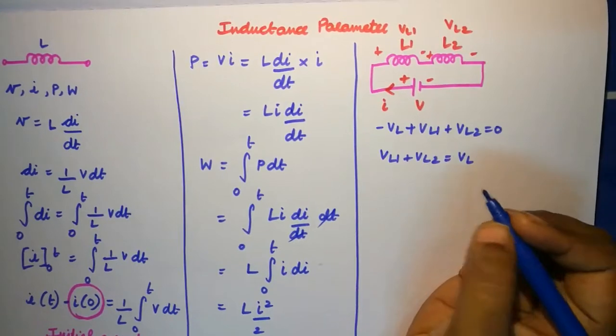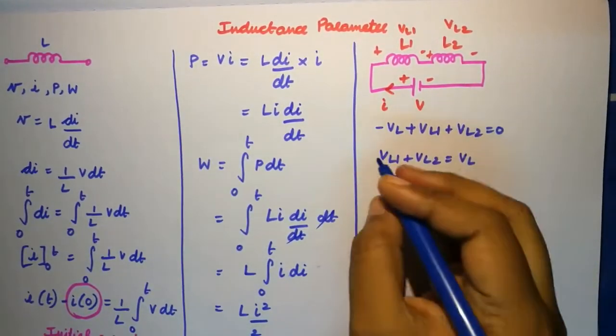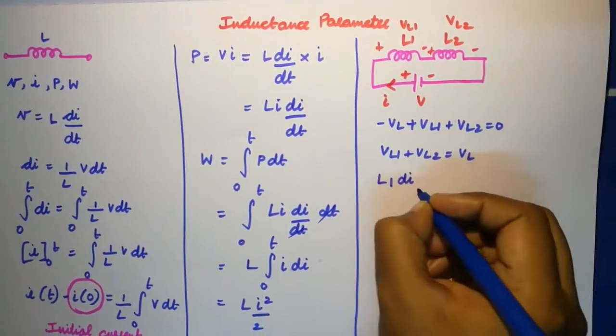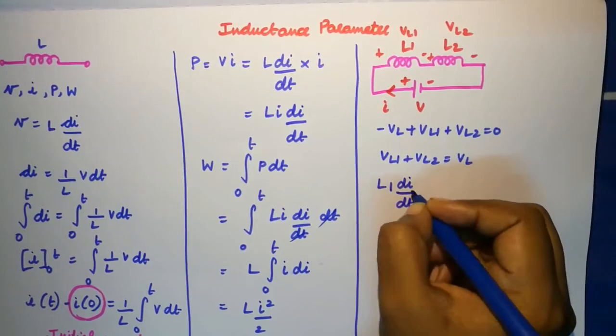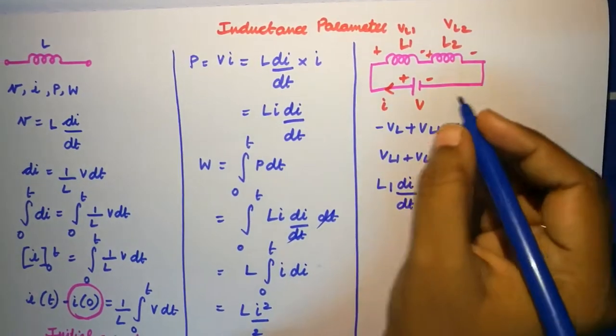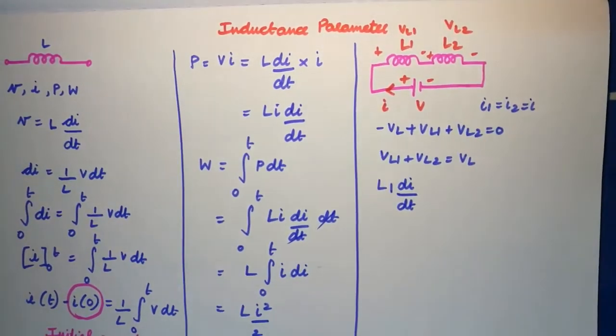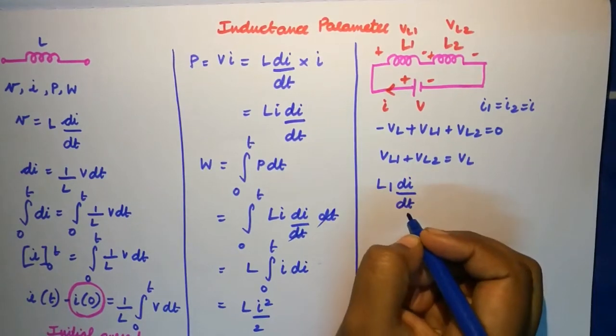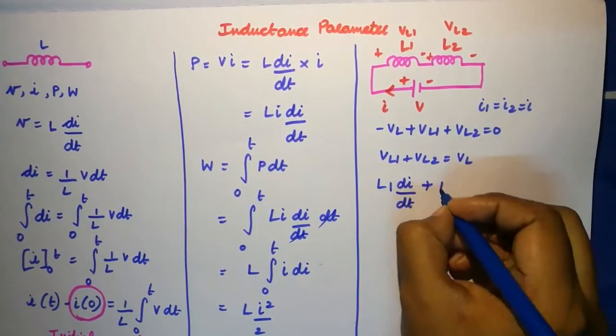Now let us substitute the values of vL1, vL2, and vL. vL1 is nothing but L1 into di by dt. It's supposed to be di1 by dt, but since current i1 is equal to i2 is equal to i for a series circuit, I'm simply saying L1 di by dt plus L2 di by dt.